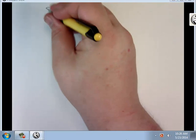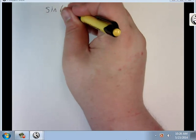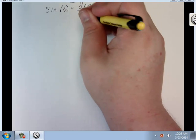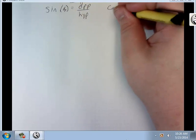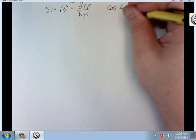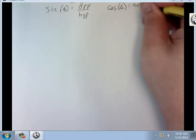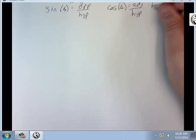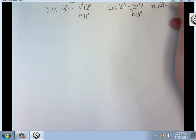Remember, we've got sine of the angle is opposite over hypotenuse. And cosine of the angle is adjacent over hypotenuse. And tangent of the angle is opposite over adjacent.